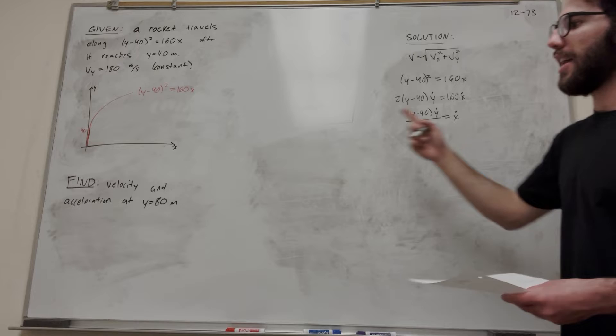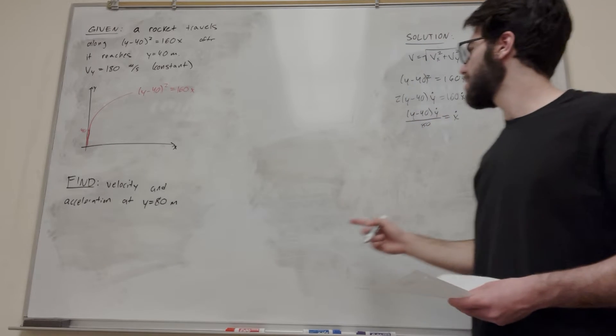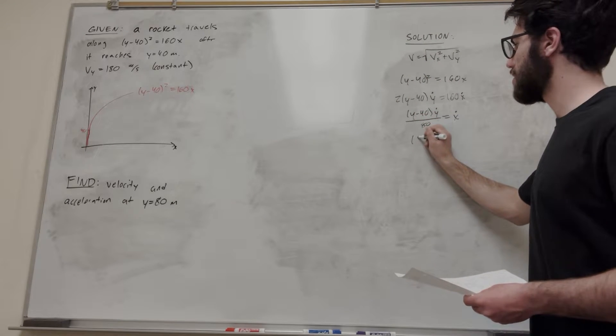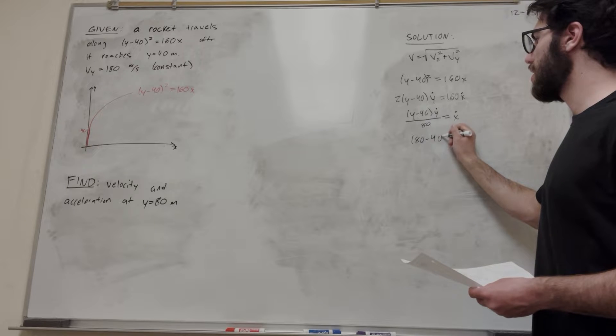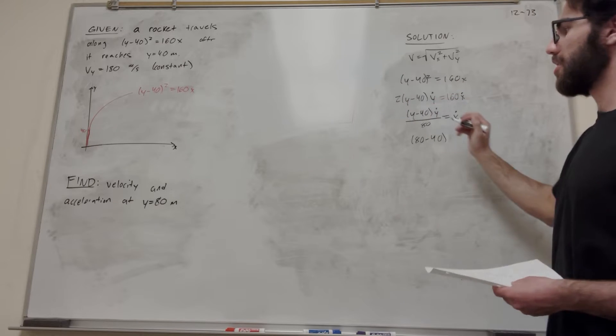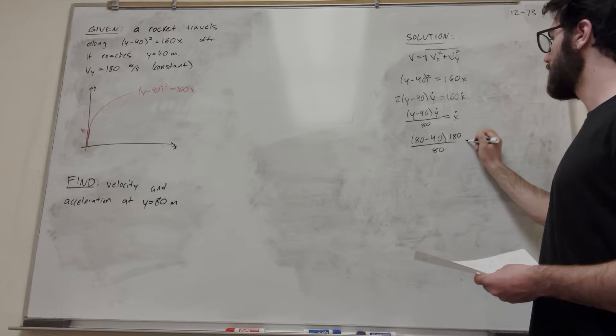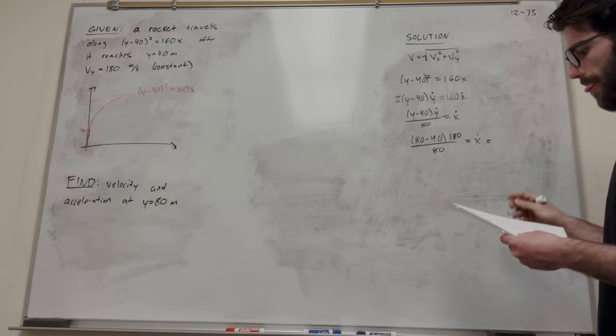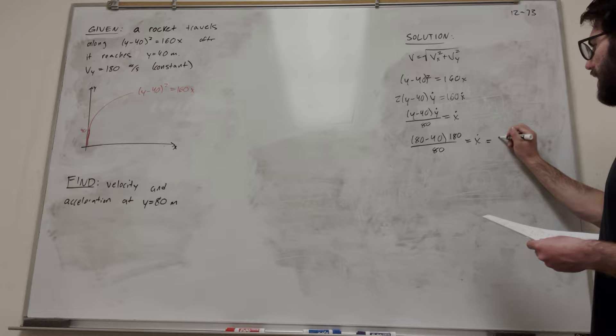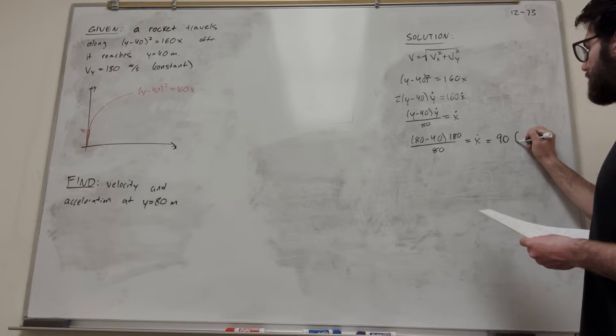Let's plug in everything we know. We're trying to find what happens at y equals 80 meters. So this y becomes 80 minus 40. y dot is a constant 180, and this 80 is constant, and it equals x dot. If you do the math, you get x dot equals 90 meters per second.